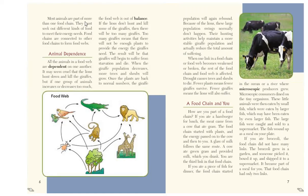Most animals are part of more than one food chain. They must seek out different kinds of food to meet their energy needs. Food chains are connected to other food chains to form food webs — the other main way we organize the passage of energy from one living thing to another. Right here is a picture of a food web containing about four or five different food chains all linked together.